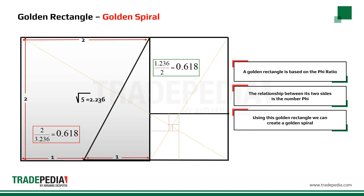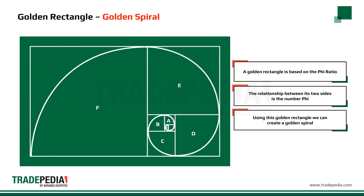Using this golden rectangle, we can create a golden spiral. A golden spiral moves by the number phi every one quarter turn. That means if you take A over B, it is equal to 0.618; B over C is equal to 0.618, and so on.